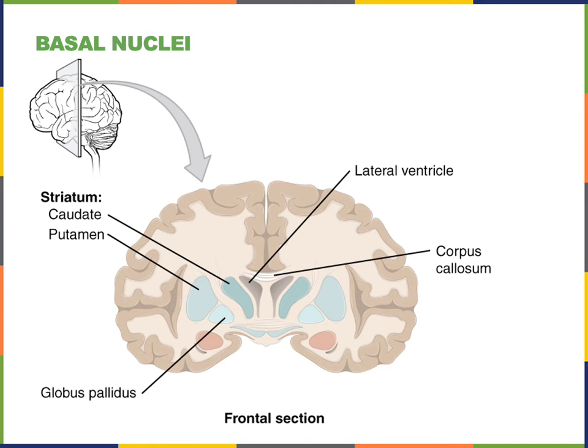Major basal nuclei important for regulating the motivation of motor commands include the striatum. The striatum consists of two nuclei: the caudate nucleus and the putamen. These regions receive input from the cortex and send commands to another basal nucleus known as the globus pallidus. The globus pallidus then regulates a pathway from the thalamus to the motor cortex, providing the information processed by the basal nuclei to regulate motivation at the level of the motor neurons.